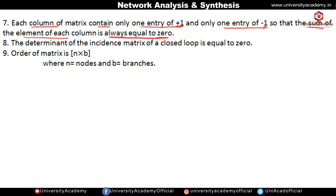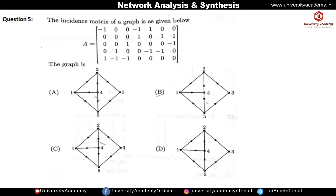This is an important property: when we add any column of the incidence matrix, it results in zero. As a result, when we calculate the determinant of the incidence matrix of a closed loop, it will always be equal to zero. The order of the incidence matrix is given by n cross b, where n is the number of nodes and b is the number of branches.